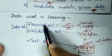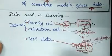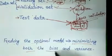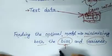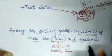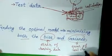From candidate models, we can choose one good model — the best model — and test it on the test data to compute errors. Finding an optimal model means minimizing both the bias and the variance. Bias is the error on the training data, and variance is the error on the test data.